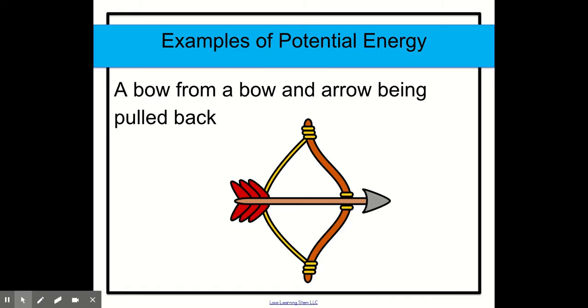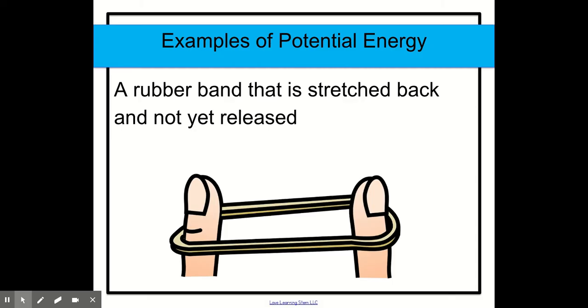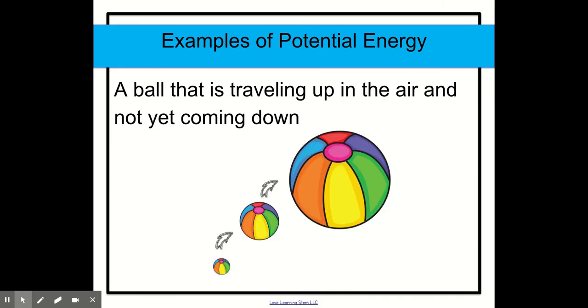Let's look at this bow from a bow and arrow. So when you get the arrow or the bow being pulled back, then that has potential energy. It has the potential to get released into the air and have kinetic energy. The same with this rubber band. When it is stretched back and not yet released, it actually has potential energy. Here is a ball that is traveling up in the air and not yet coming down. Right now it's just traveling up and that's when it has potential energy. So when it comes down, that's when it has kinetic.